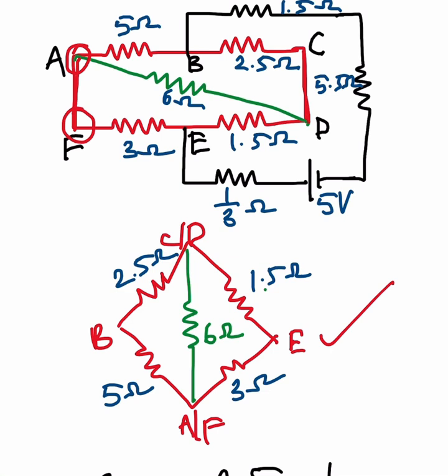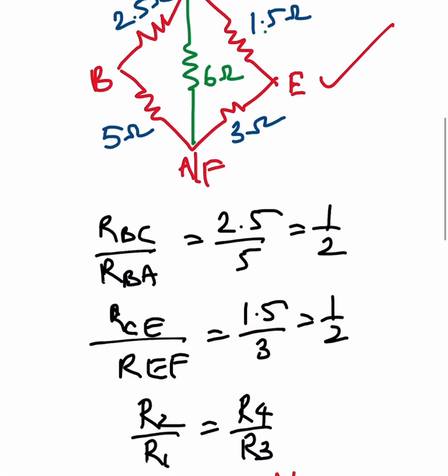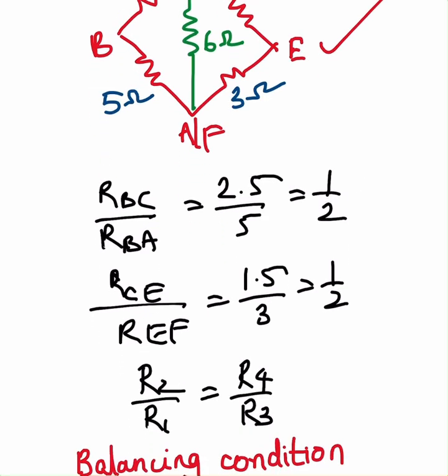Now if you observe the resistances, you can see the ratio of the resistances in the arms BD and BA. At the same time, DE and FE both are in the same ratio. You can see which I have calculated and kept ready: 1 to 2 and 1 to 2.